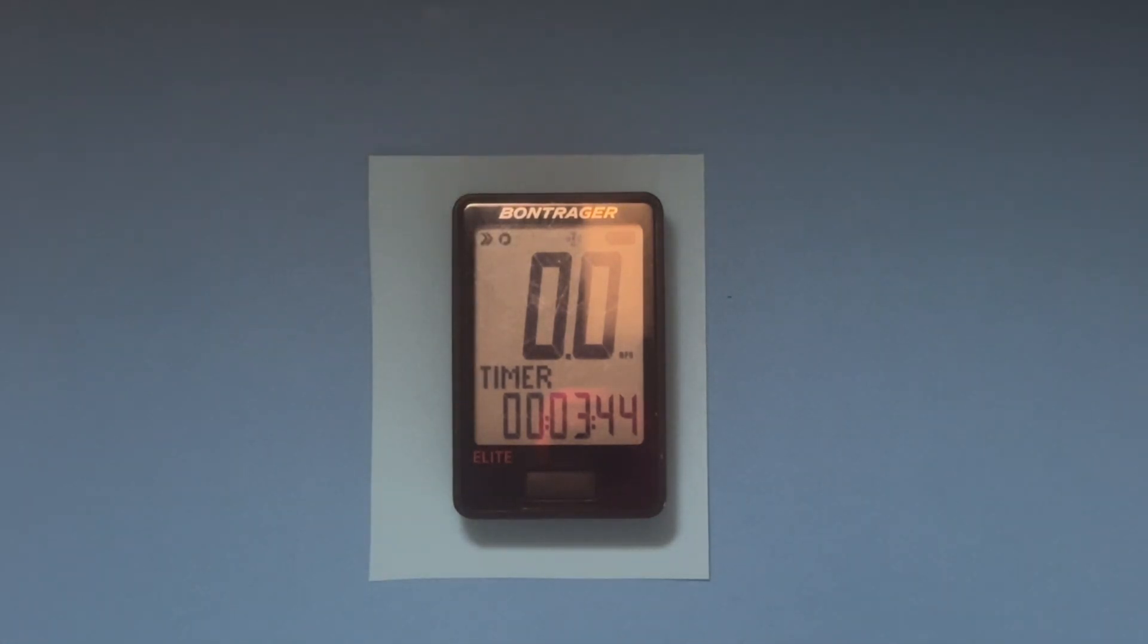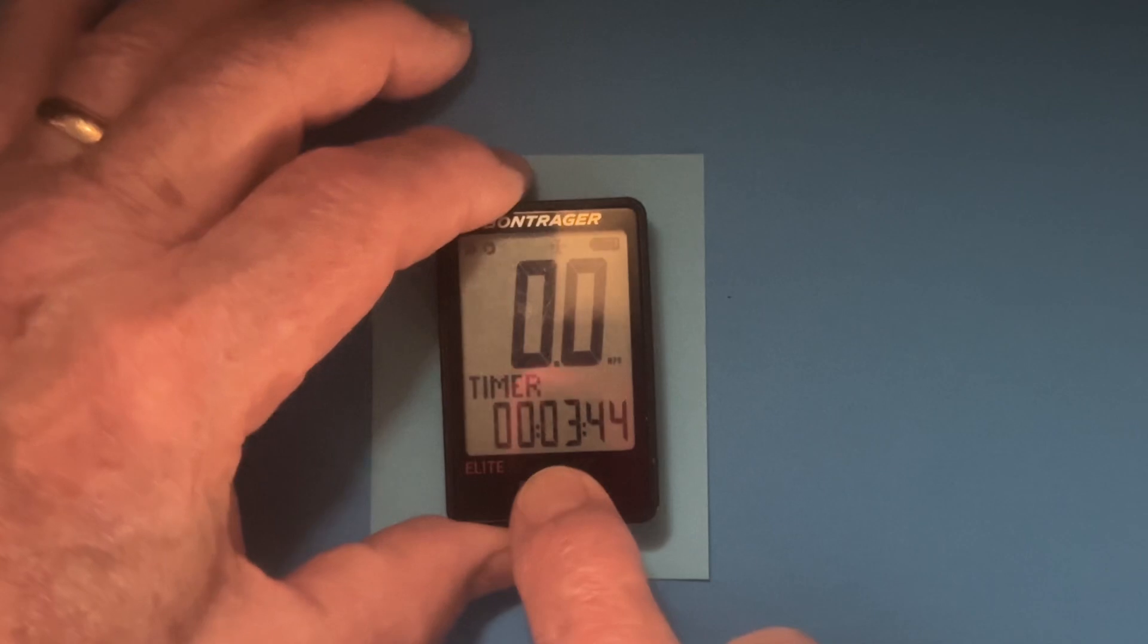What you do is if you're riding and it starts to get a little dusky, you press the front button for 10 seconds.